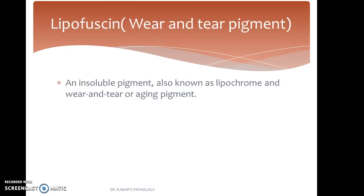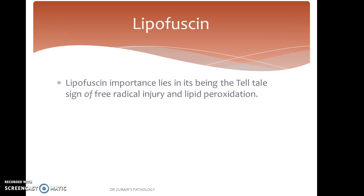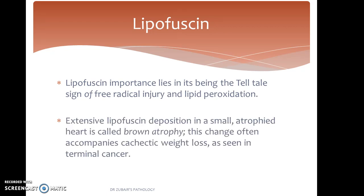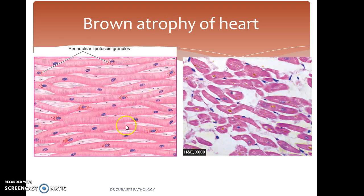Lipofuscin, also called the wear and tear pigment, is an insoluble pigment also known as lipochrome or aging pigment. It is basically the insoluble material left after autophagy, composed of polymers of lipids and phospholipids complexed with proteins. Its importance lies in being a tell-tale sign of free radical injury and lipid peroxidation. Extensive lipofuscin deposition in a small atrophied heart is called brown atrophy, which often accompanies cachexic weight loss as seen in terminal cancer. In the image, we find muscle fibers with the brown pigment inside.